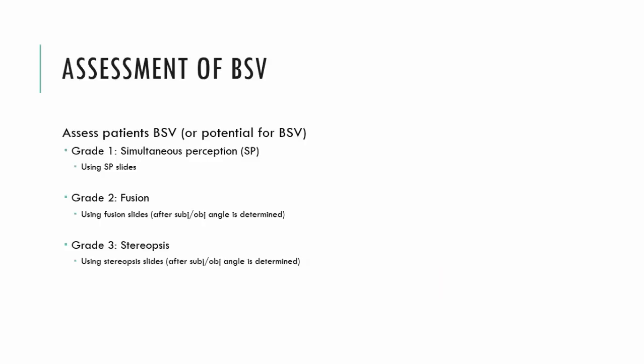As I mentioned in previous videos, we can assess all three grades of binocular single vision using the synoptophore. We can assess grade 1, simultaneous perception; grade 2, fusion; and grade 3, stereopsis. We assess the three grades in that specific order when using the synoptophore.